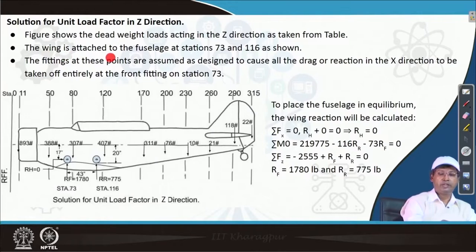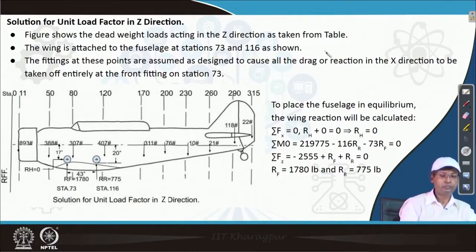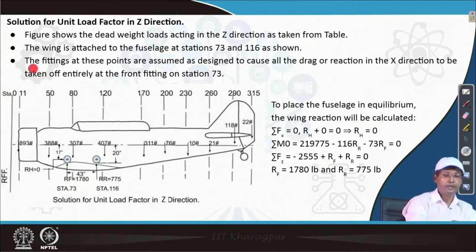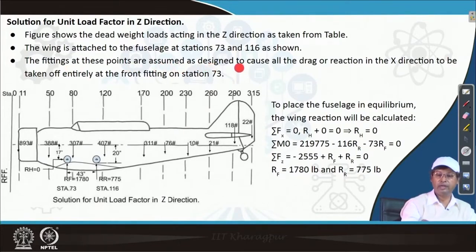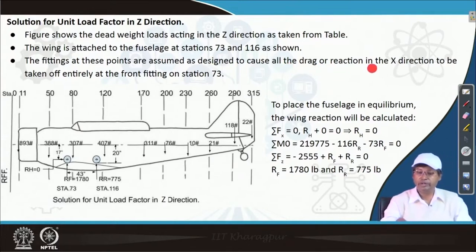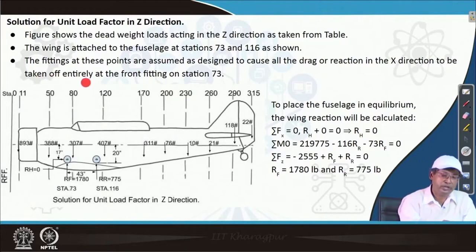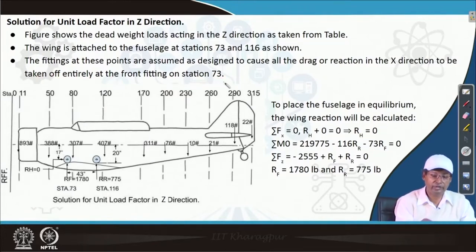The wing is attached to the fuselage at stations 73 and 116 as shown. The fittings at these points are assumed as designed to cause all the drag or reaction in the x direction to be taken off entirely at the front fitting at station 73. That means whatever horizontal force is coming, it is taken by the fitting at station 73.